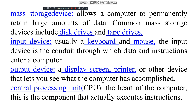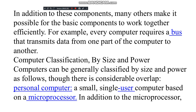Output devices — a display screen, printer, or other device — let you see what the computer has accomplished. The central processing unit is the heart of the computer; it is the component that actually executes instructions. In addition to these components, many others make it possible for the basic components to work together efficiently. For example, every computer requires a bus that transmits data from one part of the computer to another.